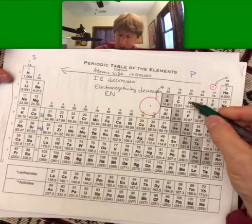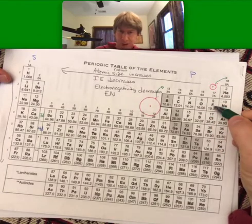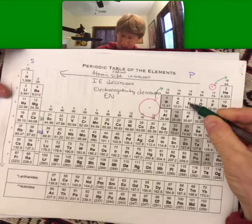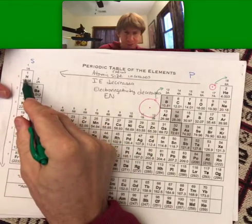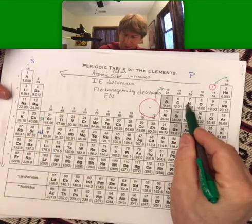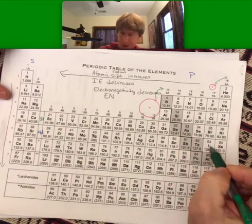They're going to be nitrogen, oxygen, fluorine, chlorine, bromine, and iodine. So a nice shape of a seven, except for the last one is hydrogen, way over here. So hydrogen, NOF, down to here.